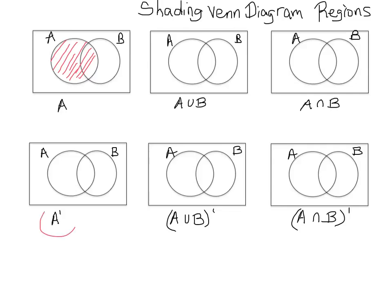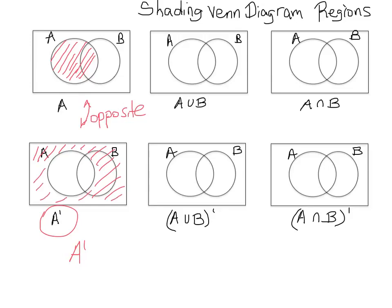Now if you look below, you're being asked to shade A with a little tick — it's called A complement. A complement is the opposite of A, so when you look at the diagram, A complement is going to look like everything outside of A.